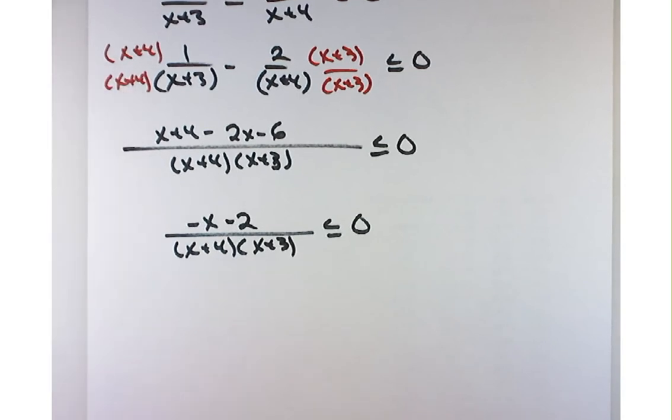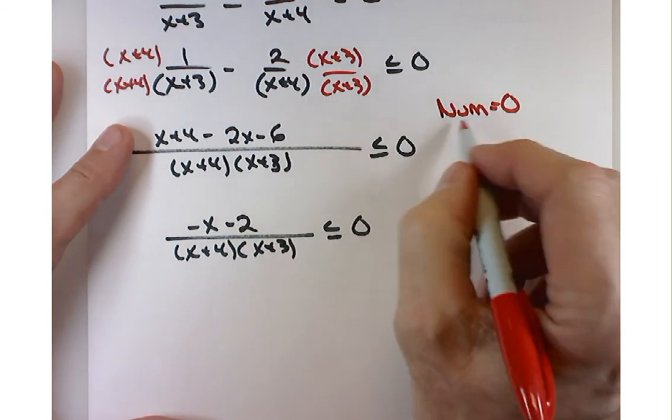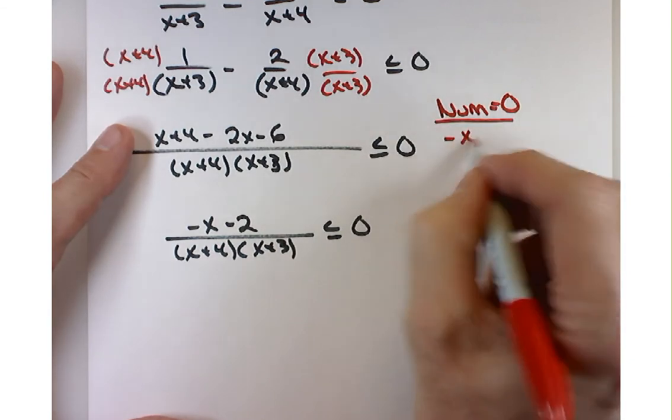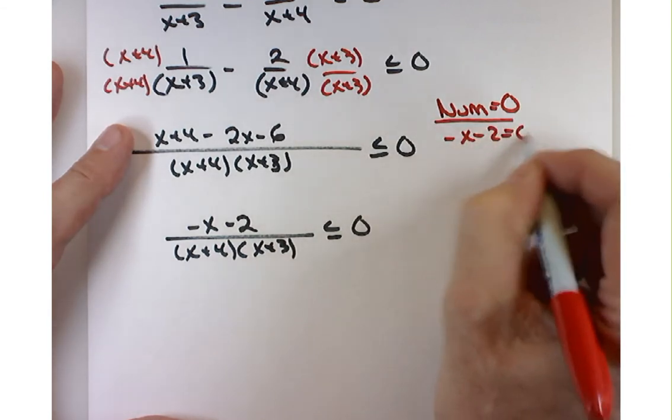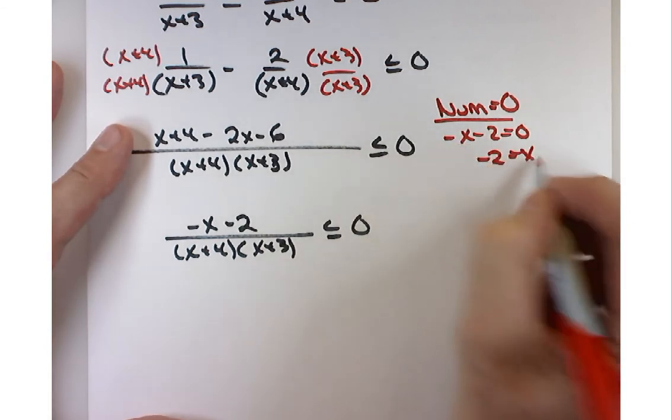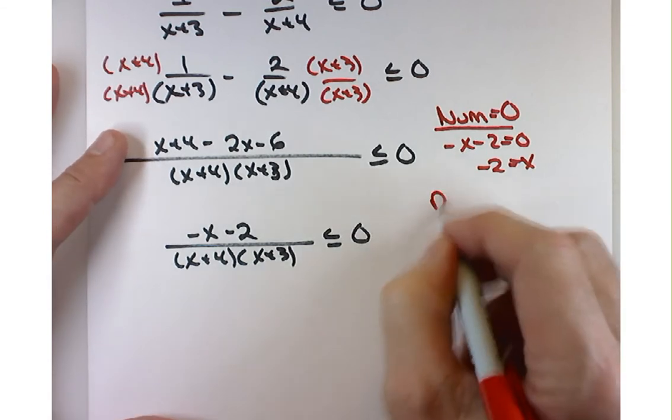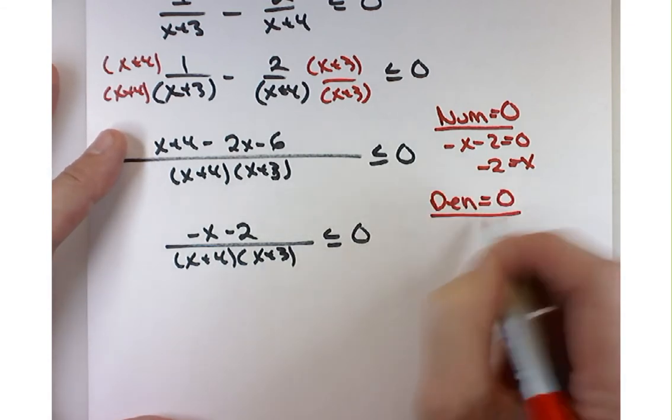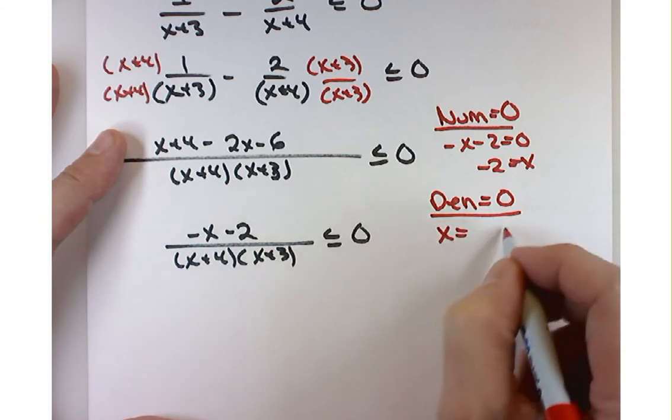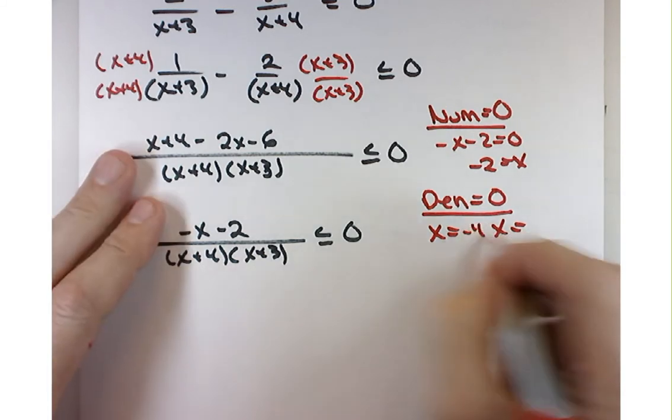Do you remember what happens at this point? I need to find where the numerator equals 0, which is minus x minus 2 equals 0. If I move the x to the side, it becomes positive, so it's when x is negative 2. Denominator equals 0. I hope you can just read those off to me. Prove me right. Negative 4 and negative 3. Perfect.